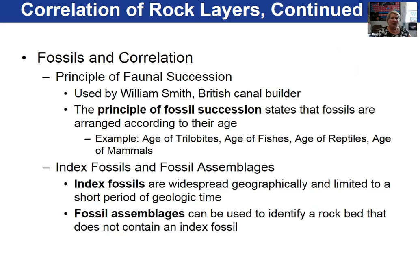When we correlate rock layers, oftentimes we depend upon fossils. The principle of faunal succession, introduced by William Smith, says that fossils are arranged according to their age and that no fossil is ever found out of sequence anywhere on the globe. The term index fossil refers to a fossil that is widespread geographically — it's global — but lived for a short period of time, which makes a good index fossil.